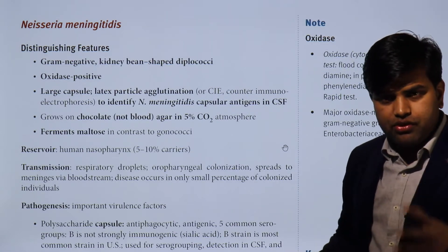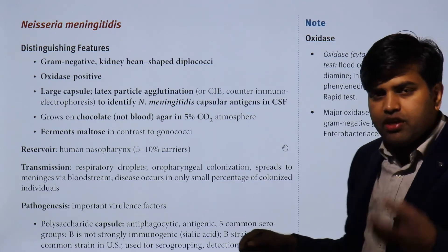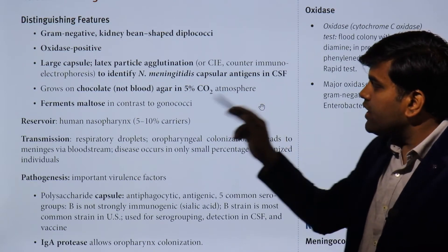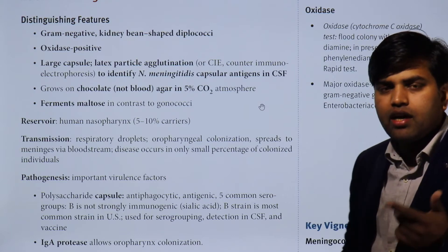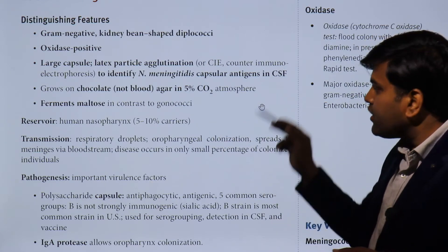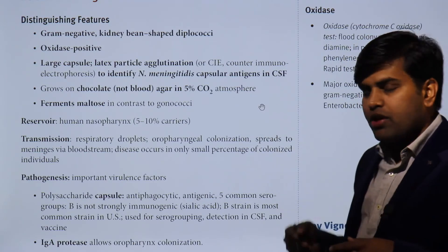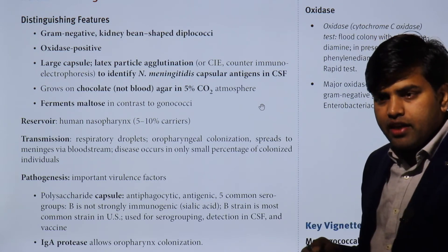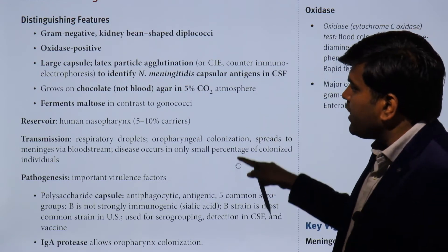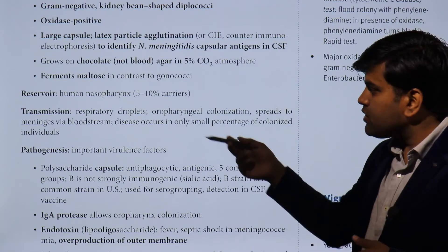Distinguished features of N. meningitidis: they are gram-negative kidney-bean-shaped diplococci, oxidase positive. They have a large capsule detectable by the latex agglutination test on CSF. They grow on chocolate agar — not on blood agar — and additionally require 5% CO2, making them capnophilic. Increased CO2 increases the yield of growth on chocolate agar. They ferment maltose in contrast to gonococci. The reservoir is the human nasopharynx and transmission is via respiratory droplets.